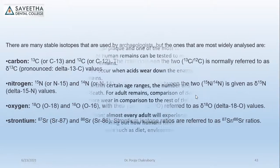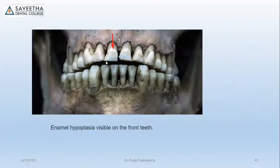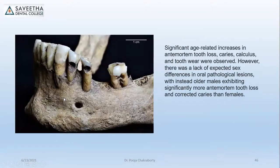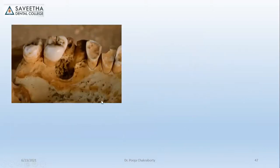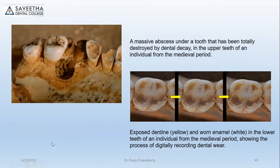Regarding teeth and health: dental disease was not new — it existed in the past. With the industrial population and introduction of carbohydrates, caries increased. Gum disease was one of the commonest examples even back then. Enamel hypoplasia visible on anterior teeth can be related to deficiency diseases from historical periods. Significant age-related conditions such as ante-mortem tooth loss, caries, calculus, attrition, and abscess can help in reconstructing history.